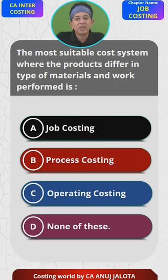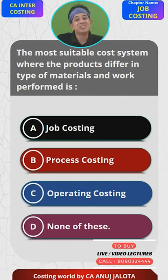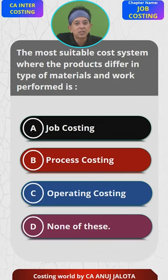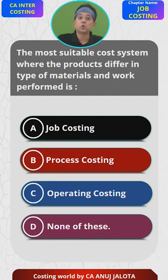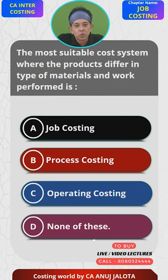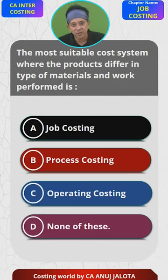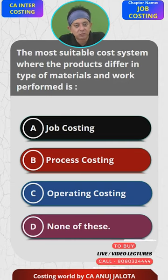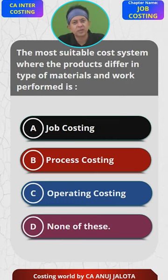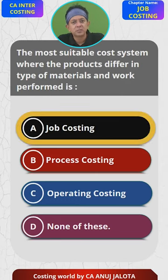Wherever each and every product is different, that means products are not standardized — every order requires manufacturing a different type of product, so every unit is heterogeneous. The system to follow is job costing. Process costing is followed where goods pass through various stages before becoming a final product, and operating costing is done for service companies. Therefore, the answer is A — job costing.